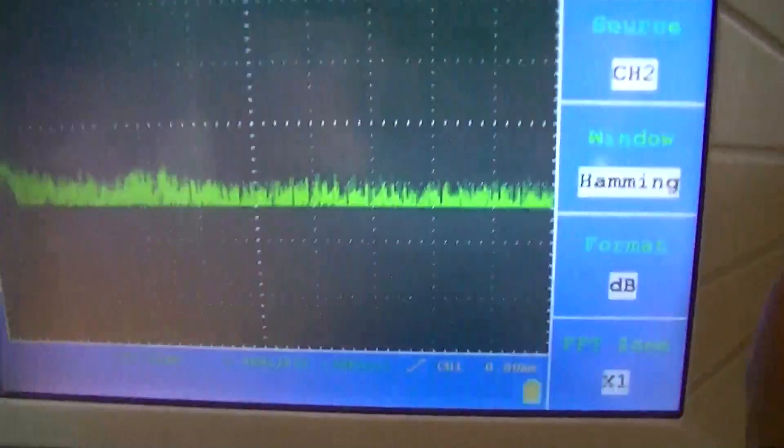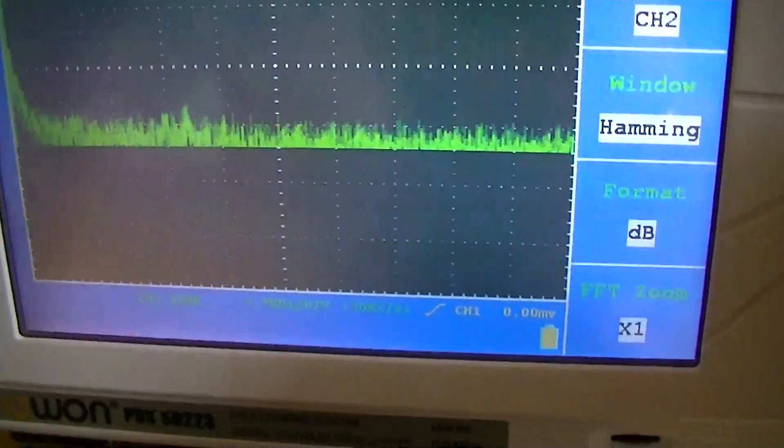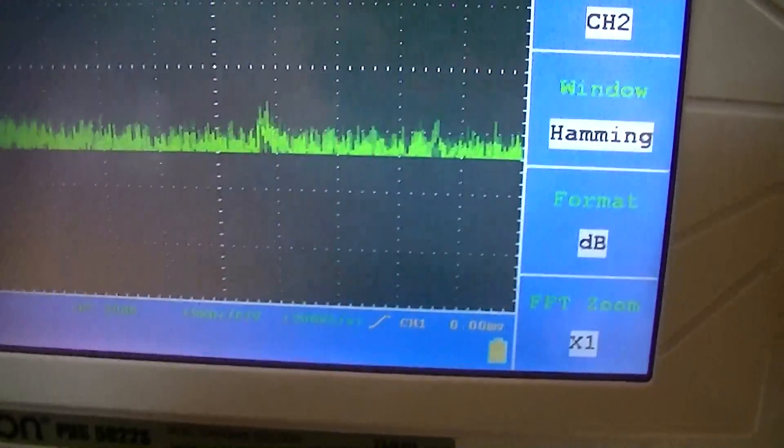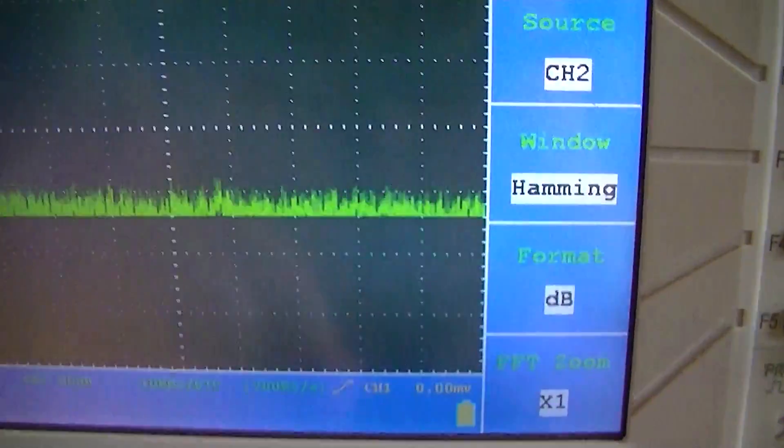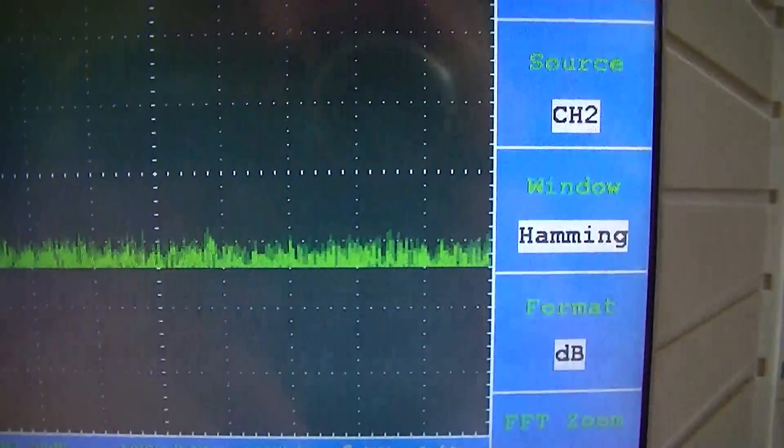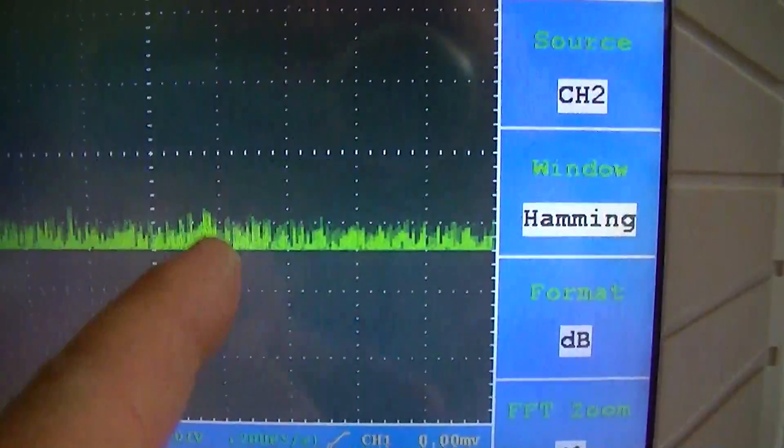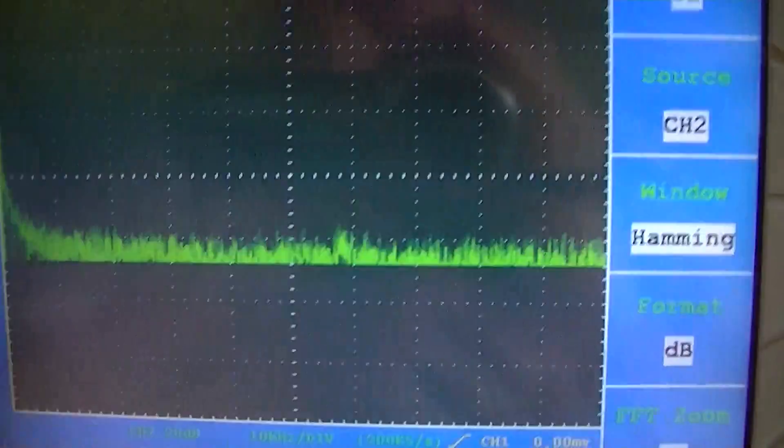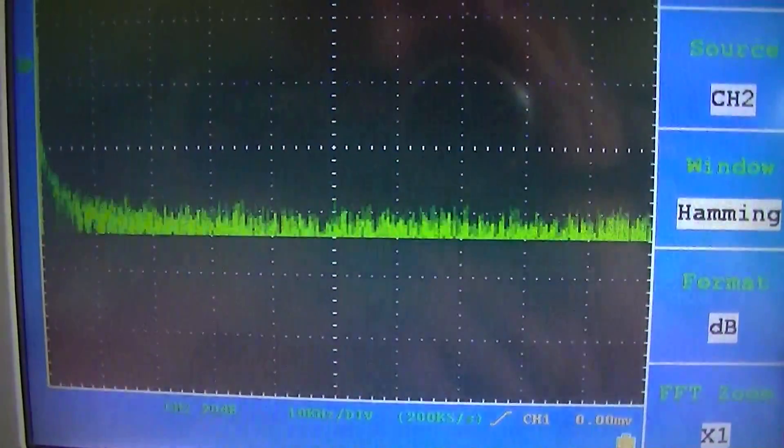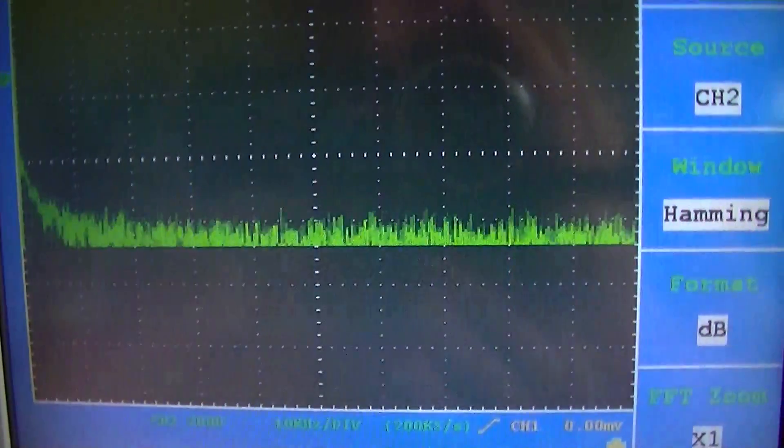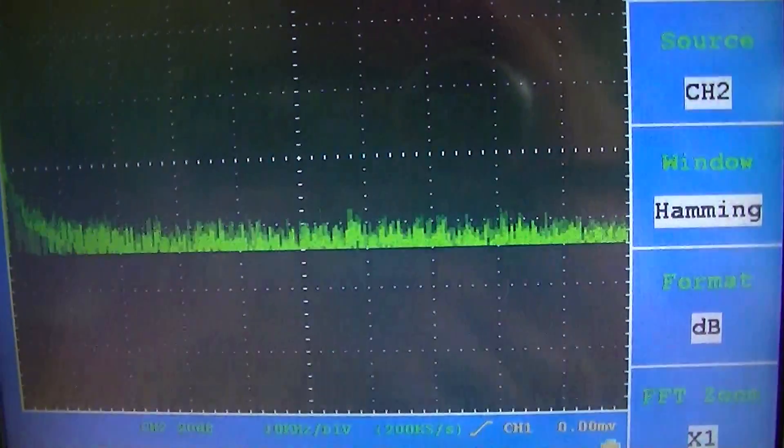Let's continue on up. We're at 10 kHz per division right now in the horizontal direction, and there's a spike right around there that you can see popping up from time to time. That's the dirty electricity frequency that we're looking at.